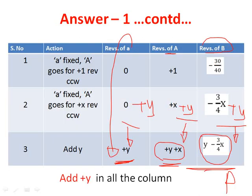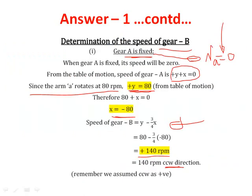The trick in the table of motion is: if you can crack the first step correctly, that step is the most important. Then the second step is to multiply by plus X, and the third step is to add plus Y. These give the speed of revolution for arm, gear A, and gear B.